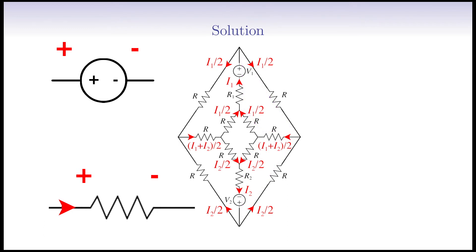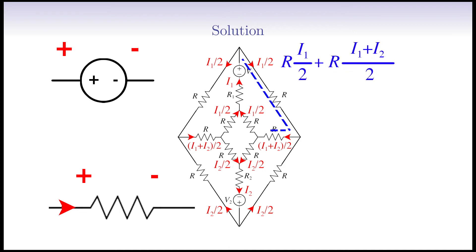Based on what was said, for the top loop we write: R multiplied by (half I1), plus R multiplied by (I1 plus I2) divided by 2, plus R multiplied by (half I1), plus R1 multiplied by I1, minus V1, equal to 0.